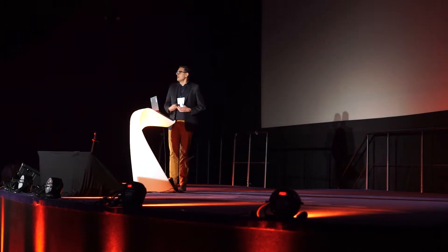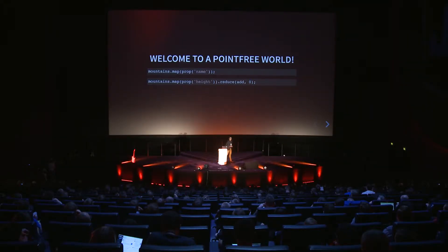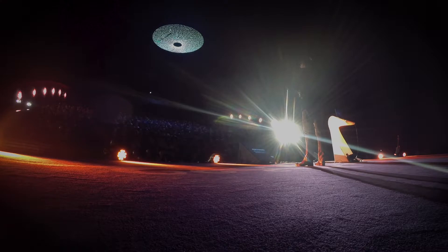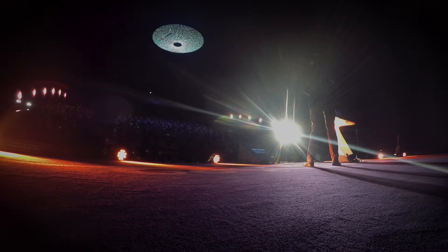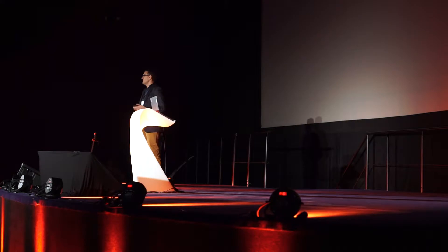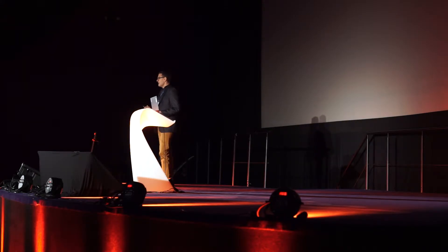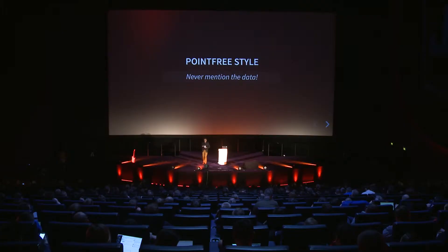What just happened? Basically I replaced these anonymous arrow functions with calls to some very small, very generic functions such as prop and add. prop, as you might guess, takes an object and returns a given property of that object. add simply adds two numbers. This captures what point-free style is really about — creating your program by composing small, reusable building blocks. By doing this, you get rid of anonymous functions and never mention the function arguments explicitly, so you focus on data transformations rather than the data itself.